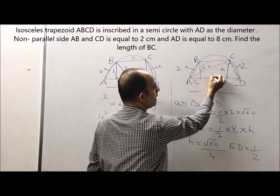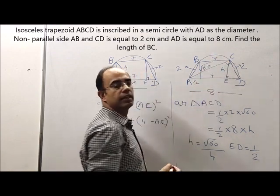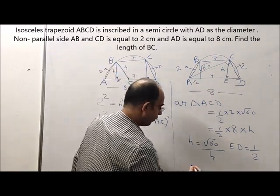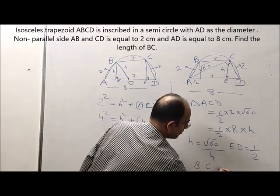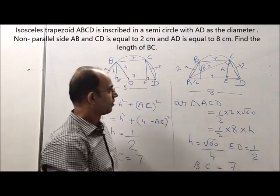Now this is 1 by 2 and again this is 1 by 2, therefore this is 7. Hence BC is 7. Therefore the value of BC comes out to be 7.